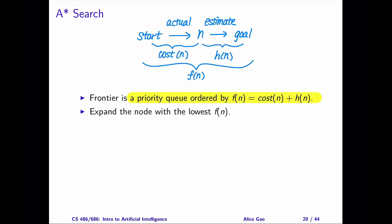Here's a picture to illustrate f of n. You can think of f of n as an estimate of the cost of the cheapest path from the start state to a goal state through the current state n. A-star makes use of both the cost and the heuristic information. Intuitively, A-star combines the idea of lowest cost-first search and greedy best-first search.